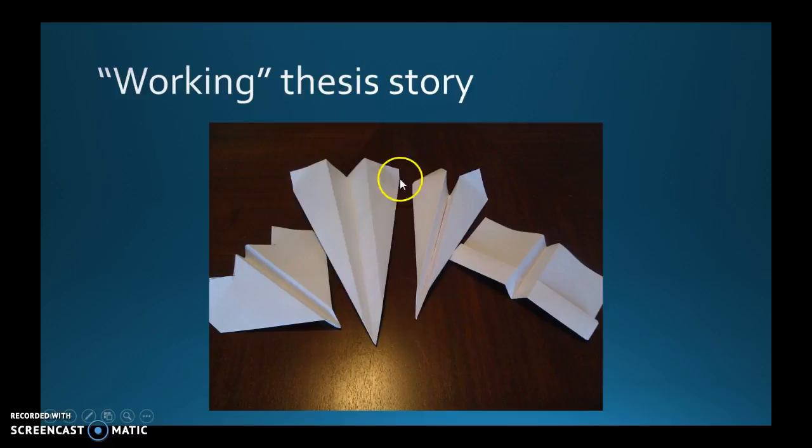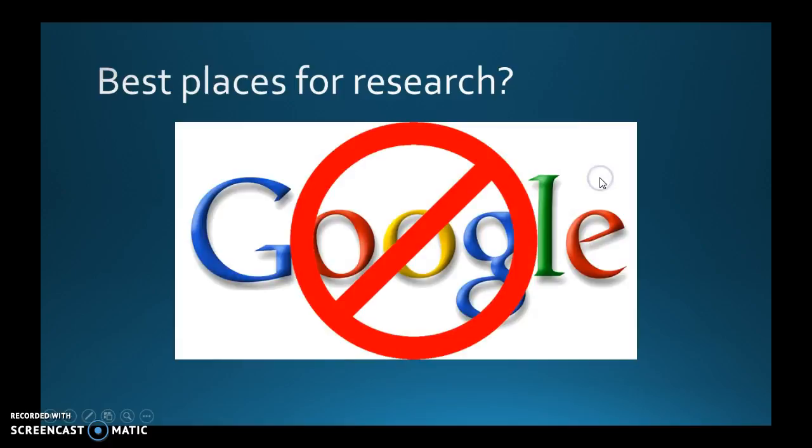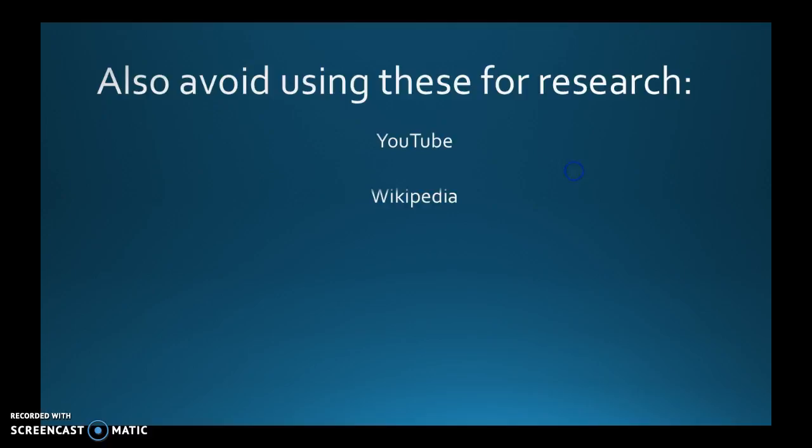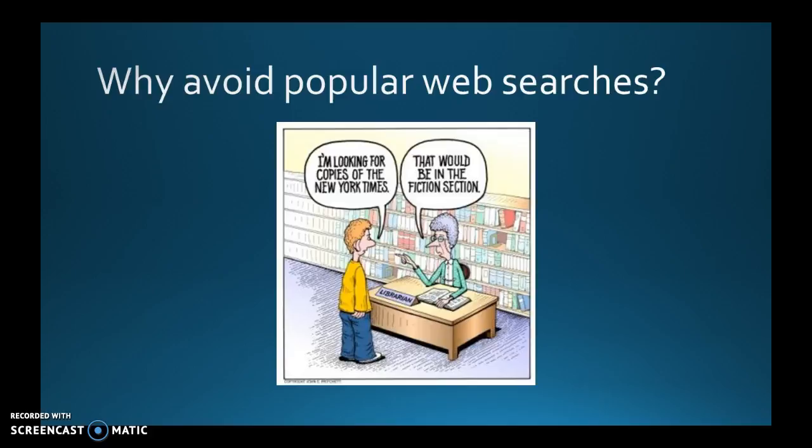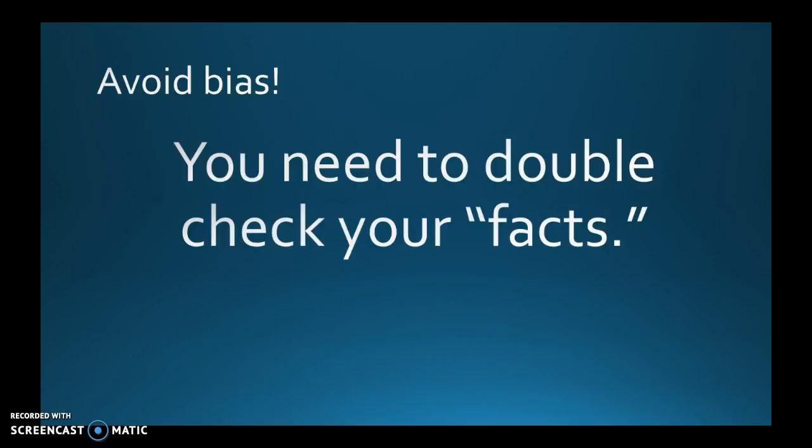The best places for research? Not Google. If you just Google stuff, you'll get lost—there's so much information it'll drive you nuts. Avoid using these for research: YouTube, Wikipedia—never use Wikipedia for research—Yahoo, Snapchat. You want to avoid bias. Just because something seems literary doesn't necessarily mean it is.